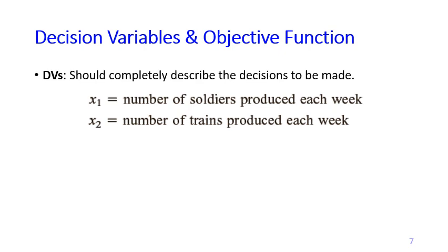The same applies to the decision for trains. At this point we don't know whether to make 0, 5, 7, 23, 17, or whatever number of trains, so we use the variable x2. These are the decisions that every single week Giapeto must make. If your first intuition is that profit is the decision — no, it is not. Profit is the consequence of your decisions. Because you produce a certain number of soldiers and trains, you get the profit. You decide how many to produce; that determines the profit.